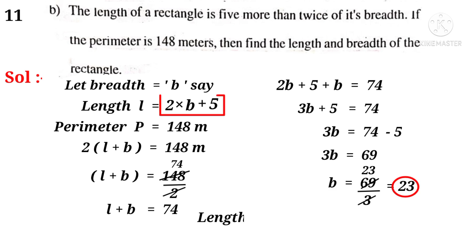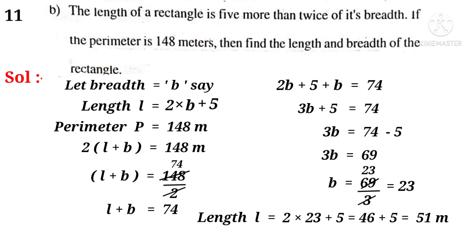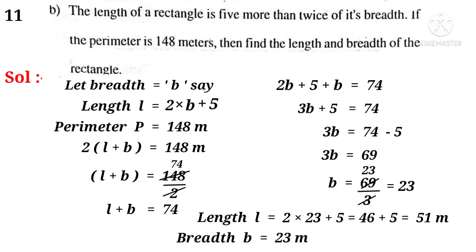Put 23 in place of b in l is equal to 2b plus 5. Then, length l is equal to 2 into 23 plus 5. That is equal to 46 plus 5, because 2 into 23 is 46. That is equal to 51. So, length l is equal to 51 meters and breadth b is equal to 23 meters.